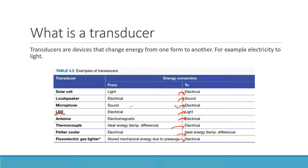When we talk about transducers, we're talking about changing energy from one form to another. You don't have to memorize all these examples. A microphone, for instance, takes sound and turns it into electrical energy or a voltage impulse. You can also go the other way — take an electrical signal and turn it into sound, which is a loudspeaker. So for most transducers, you can go in either direction.